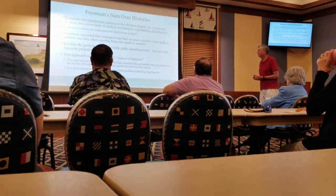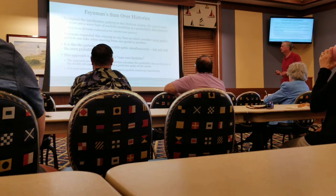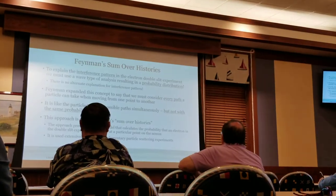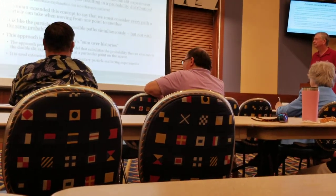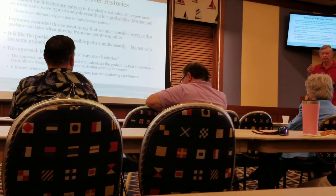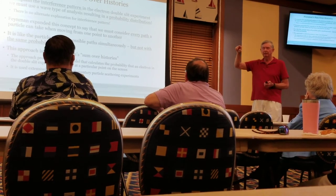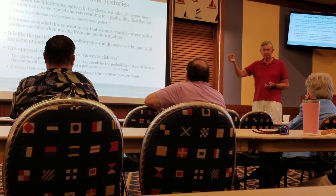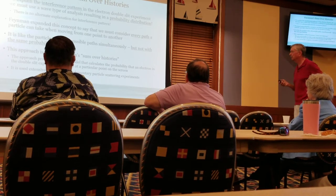To explain the interference pattern in a double-slit experiment, we use wave analysis resulting in a probability distribution. There's no other alternative explanation for interference. The probability of light showing up in a trough is near zero, but at a peak is very high. That's what the model does.